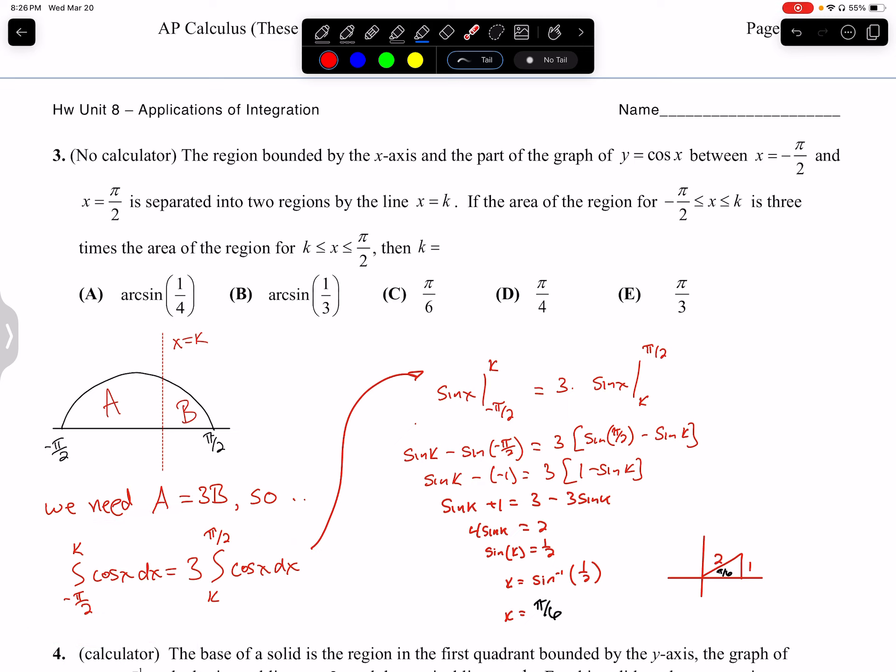Integrating cosine is sine of x. This brings us up here. So this one's sine of x evaluated from negative pi over 2 to k. This is three times sine of x evaluated from k to pi over 2. Once again, this three is because we need this area to be three times bigger than this. Just to make them equal, we have to triple this one.